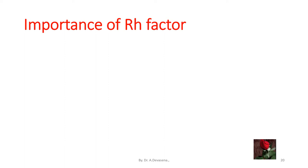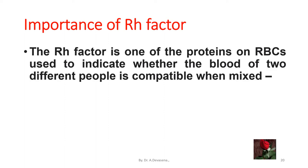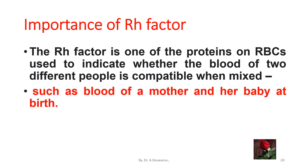The RH factor is one of the proteins on the red blood cells used to indicate whether the blood of two different people is compatible when mixed, such as the blood of a mother and her baby at birth. It is routine and important that the RH factor for a mother and unborn child be determined during pregnancy.